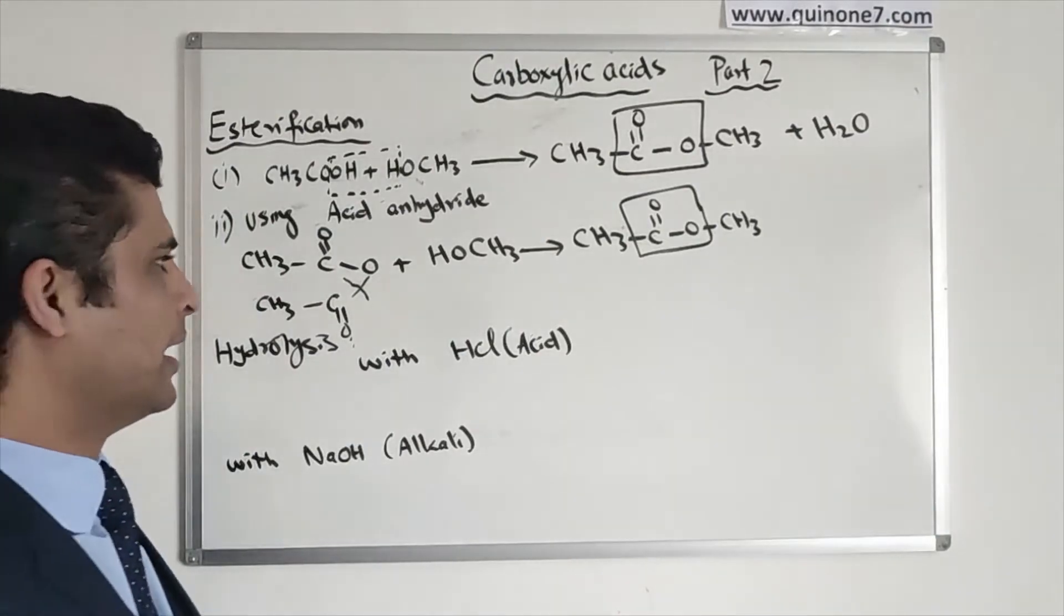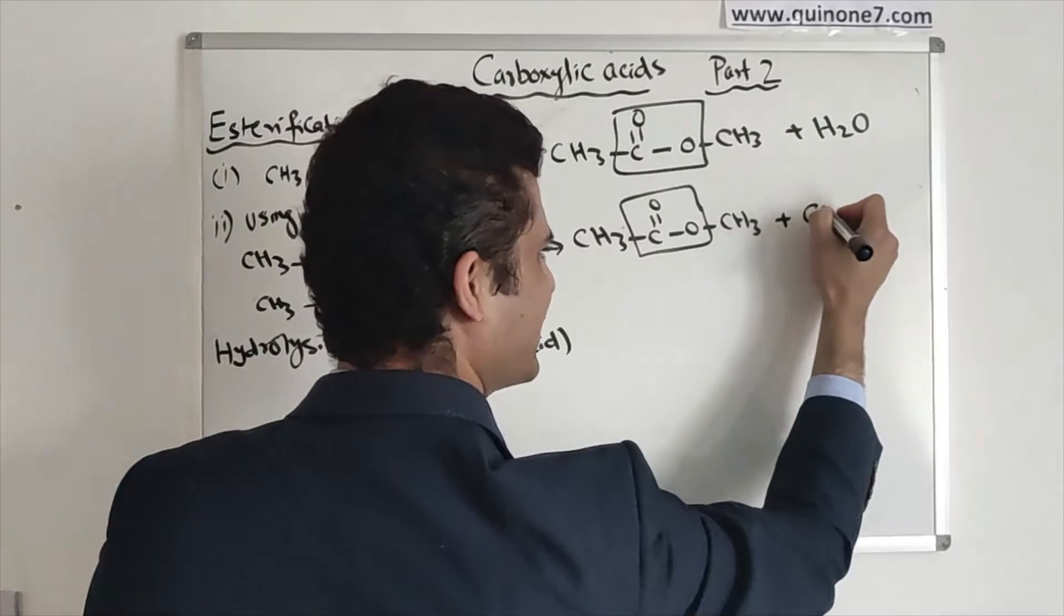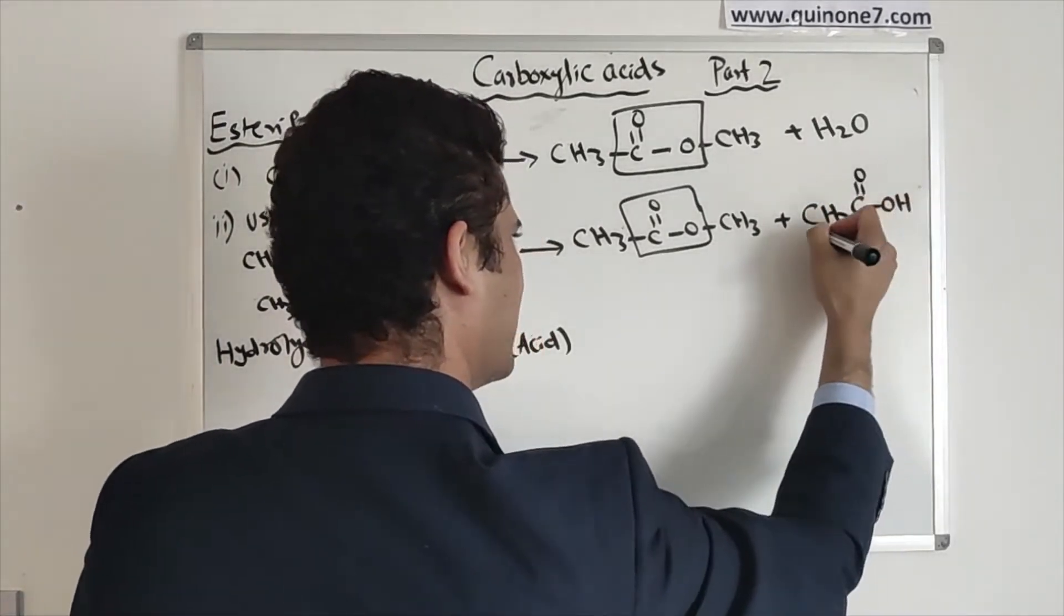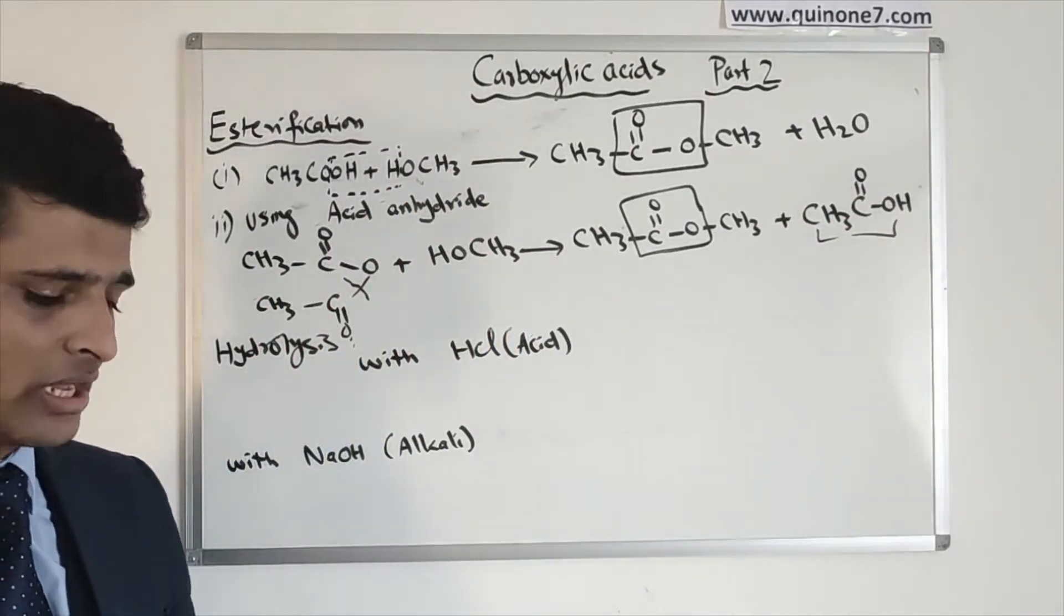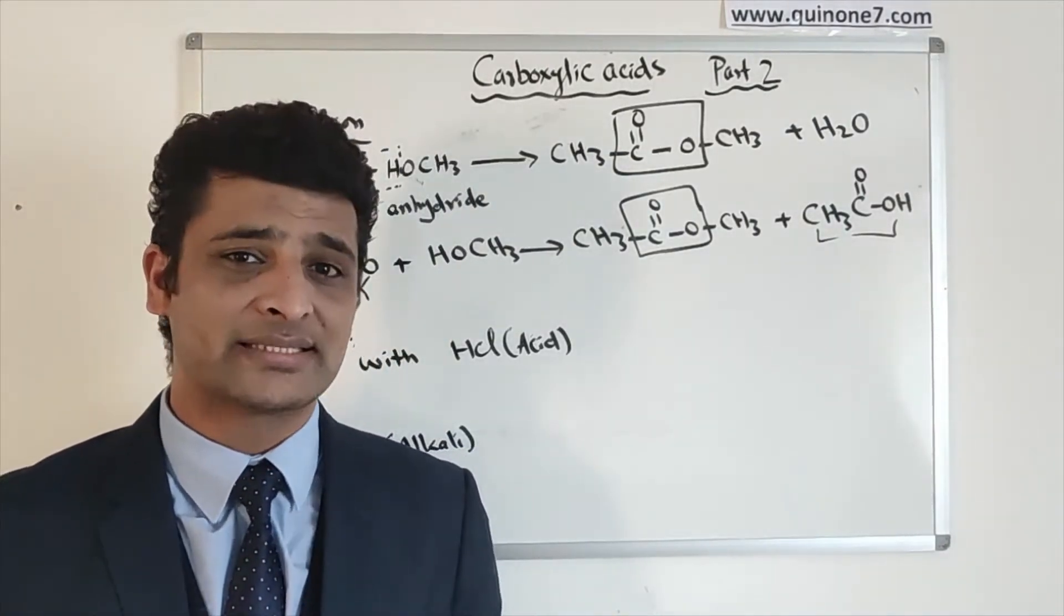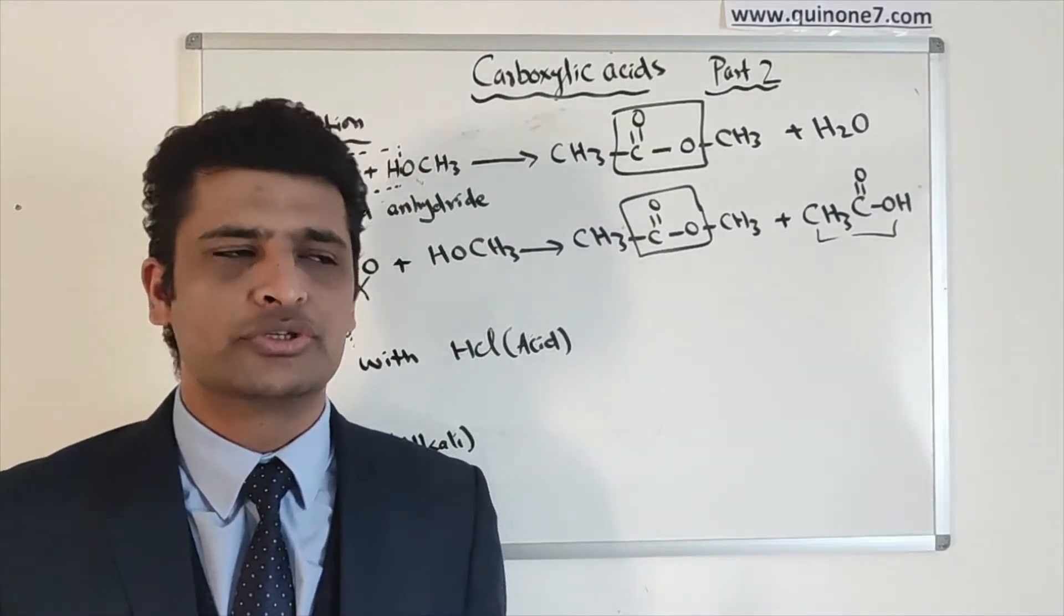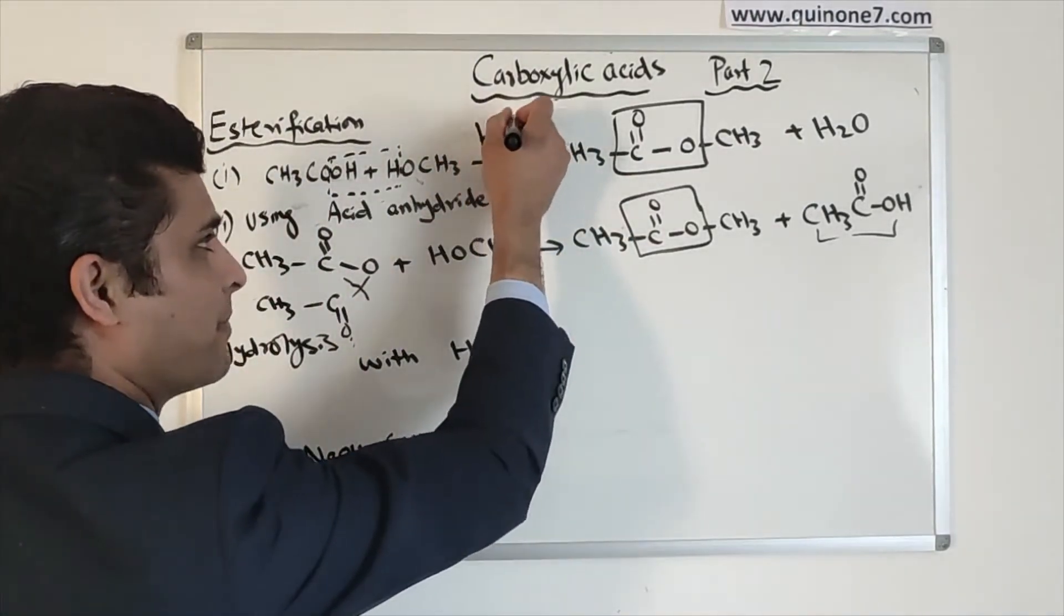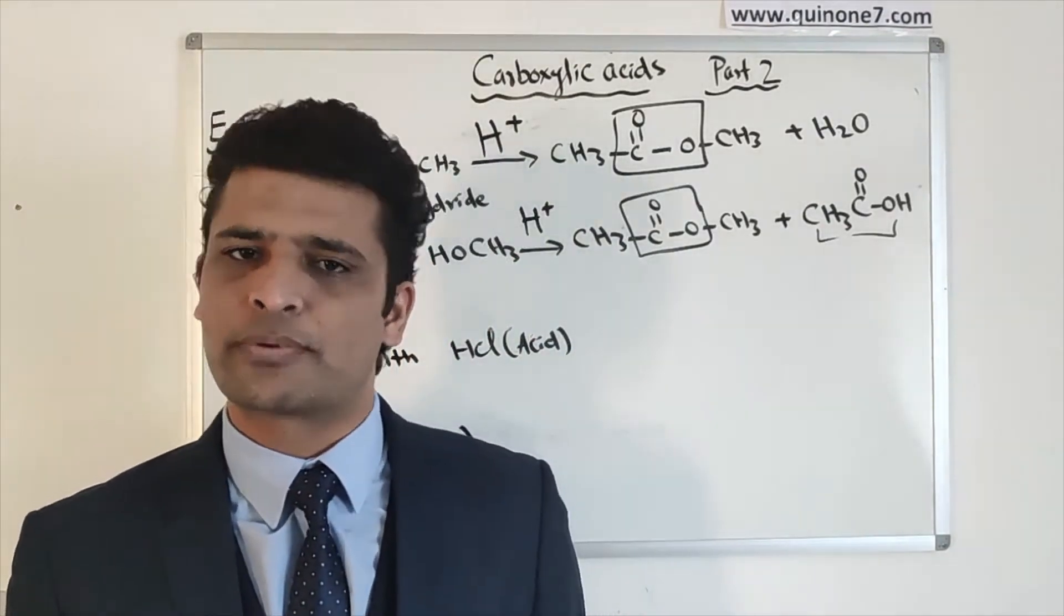You will get one ester, but you will also get a carboxylic acid as well. So you will get CH3 C double bond O bond OH. A carboxylic acid will be produced when acid anhydride reacts with alcohol. Rather than using carboxylic acid, if you use acid anhydride, they are more reactive compared to carboxylic acid, so they will give you higher yield. All these esterifications will be happening under acidic condition, so you need a strong acid which can provide the proton.